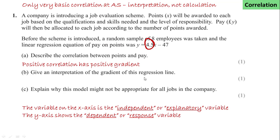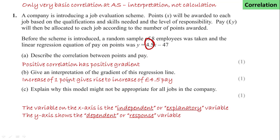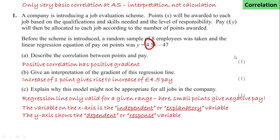To interpret the gradient of this regression line in context: an increase of one point in the job evaluation scheme gives rise in general to an increase of £4.50 in pay. Don't forget that regression lines are only useful for the given range we're working in — a very small number of points would give negative pay, which clearly wouldn't be correct or appropriate.